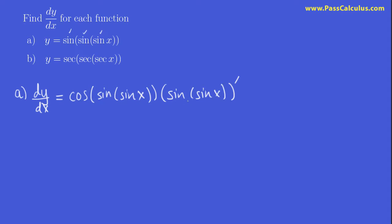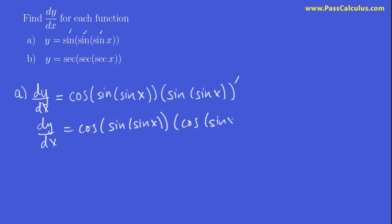Notice how we've gotten rid of one of the sines now. On this derivative here, we only have two sines to tackle. The derivative of sine here is cosine, again, of sine x, times the derivative of sine x. And I'll just write it right away as cos x.